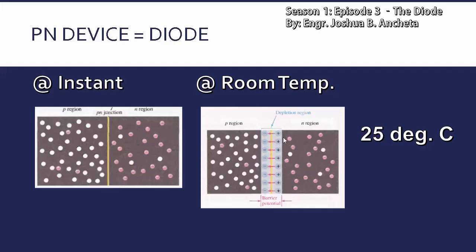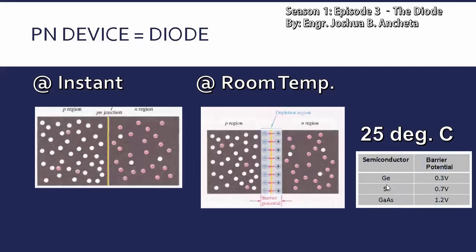Mapipigilan niya na yung further attraction of the charges — wala nang ma-attract na electrons from N region papuntang P region. And then, potential — since merong voltage na nag-i-exist dito sa depletion region. So at 25 degrees Celsius, ito yung mga barrier potential with respect to semiconductor materials: for germanium, 0.3 volt; for silicon, 0.7 volt; and then for gallium arsenide, 1.2 volt.